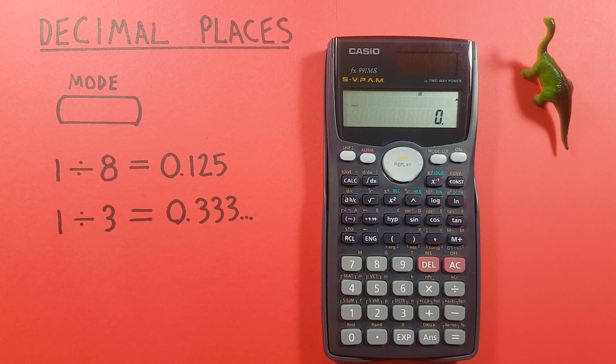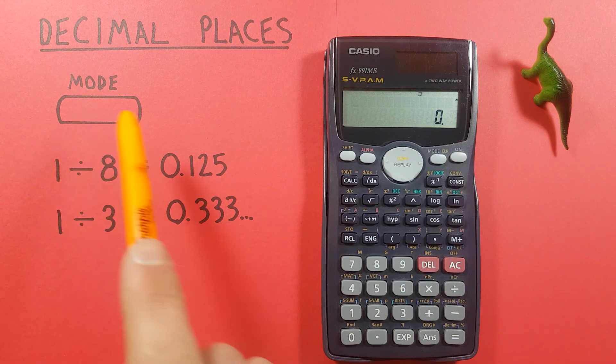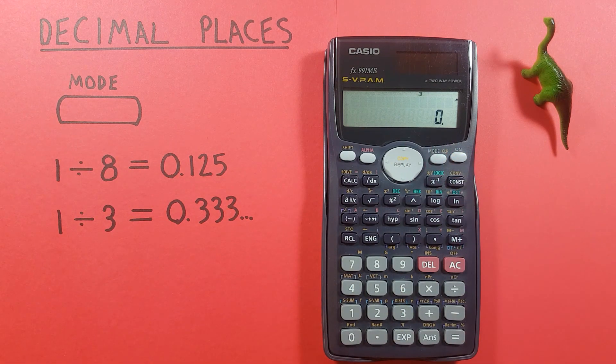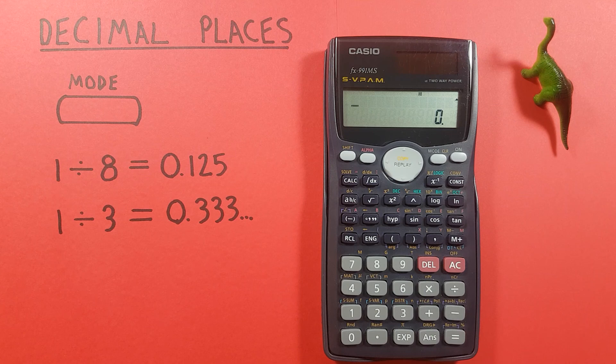To do this we need to use the mode key that looks like this and is located here. Now normally this calculator is in something called float mode or normal mode where it displays however many digits are needed to give you the answer.